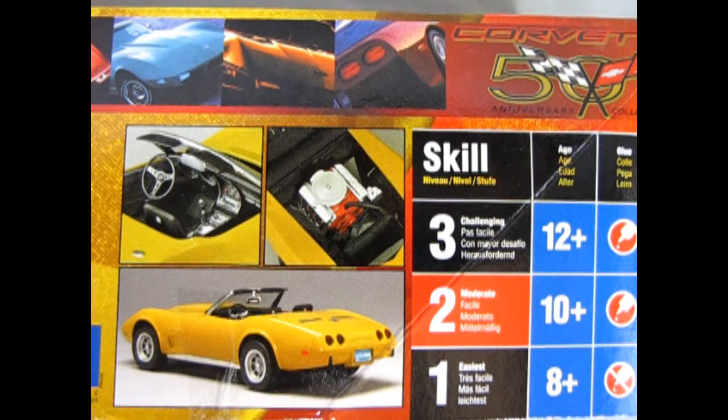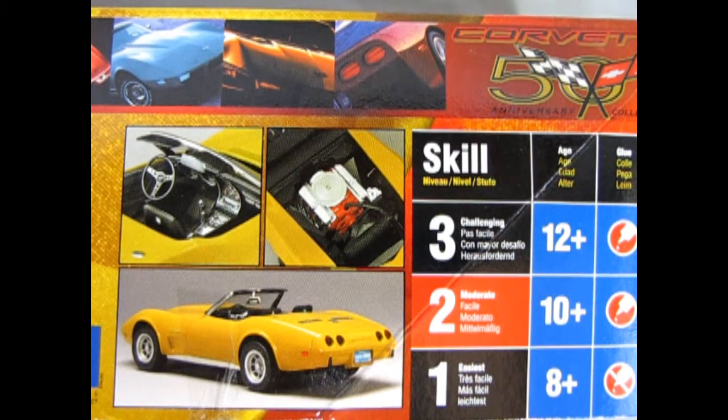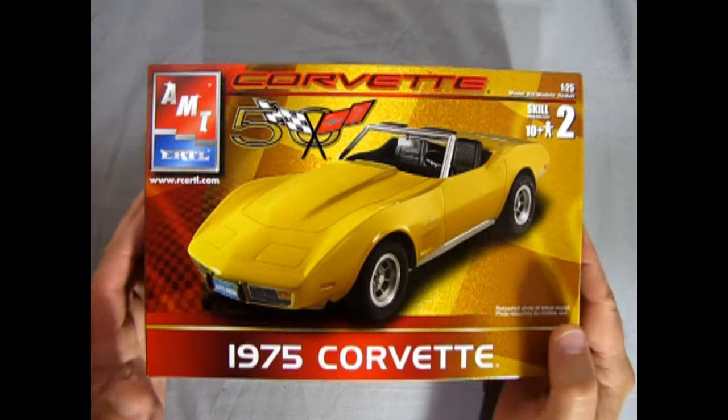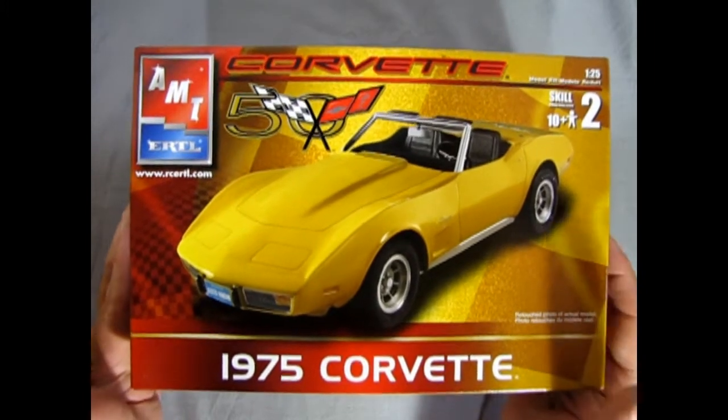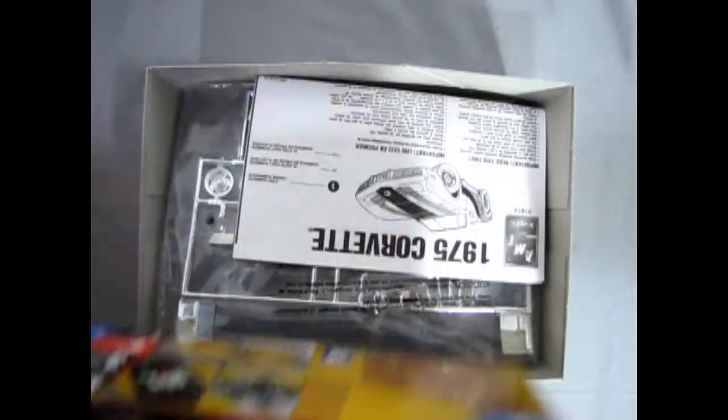As we see on the pictures on the side of the box we have the nice interior, the 350 cubic inch engine, and a nice rear view shot of the impact bumper for 1975. And now with the shrink wrap removed we can easily lift the lid off this model. And there it is.